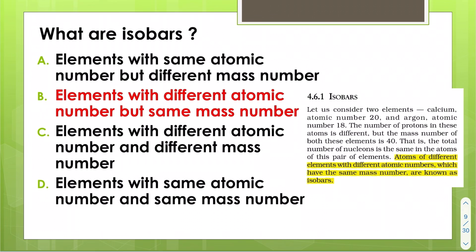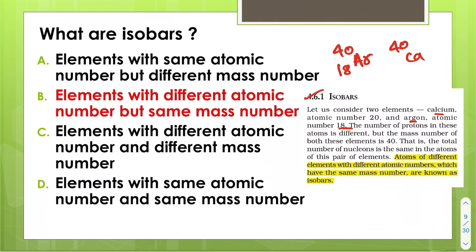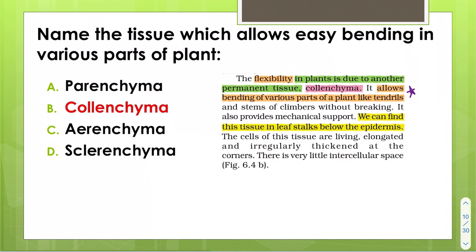Isobars — from ninth NCERT — the example given is argon and calcium. Argon has mass number 40 and atomic number 18; calcium has atomic number 20. Both have the same mass number but different atomic numbers. So isobars are elements with different atomic numbers but the same mass number.